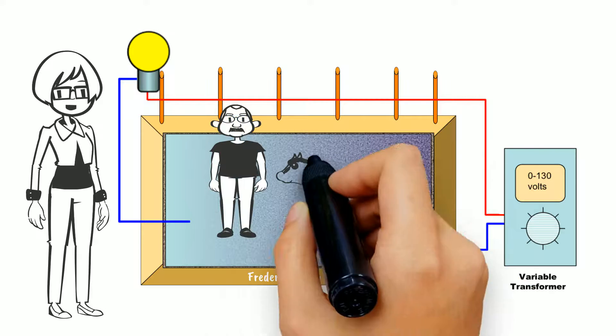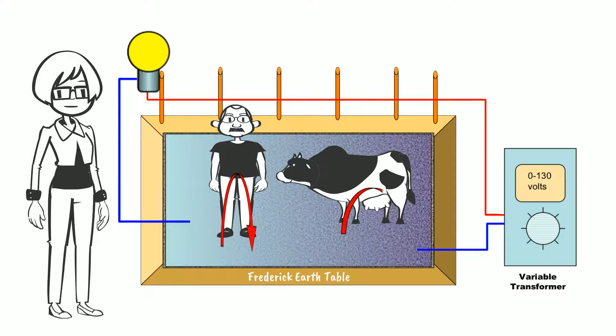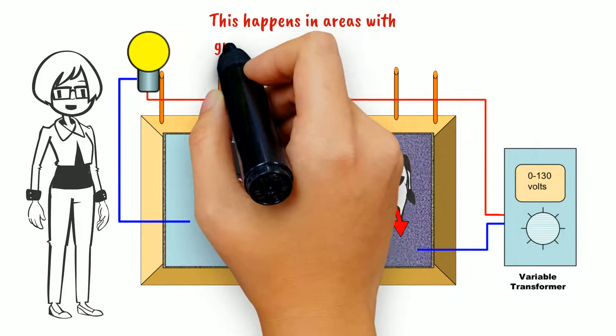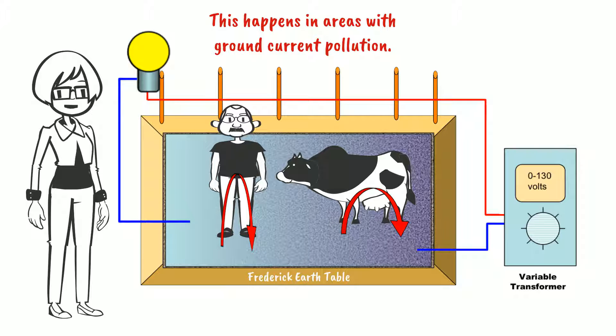If Ralph, or a cow, stood on this earth table, current would flow through both of their bodies if their feet were at different electrical potentials.